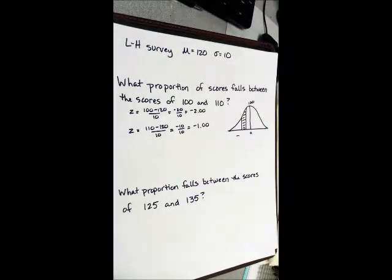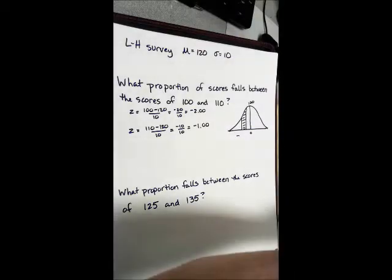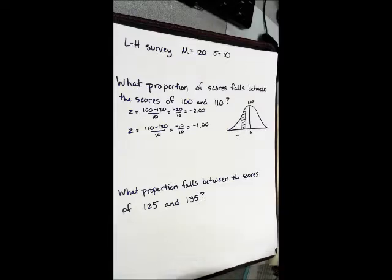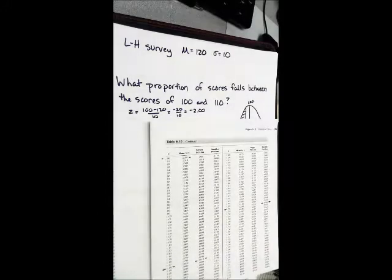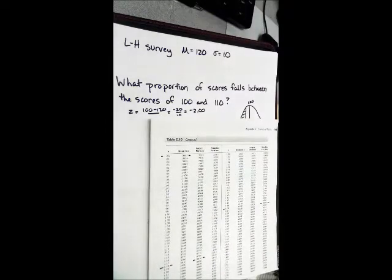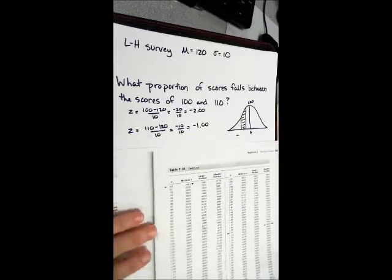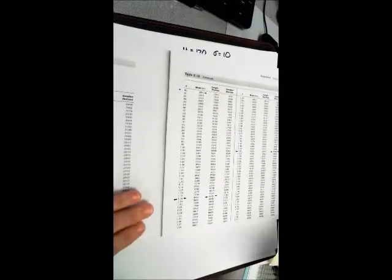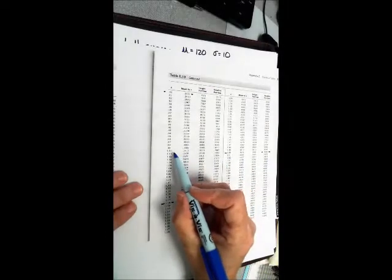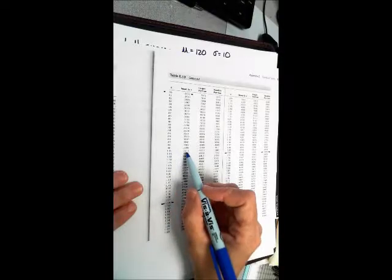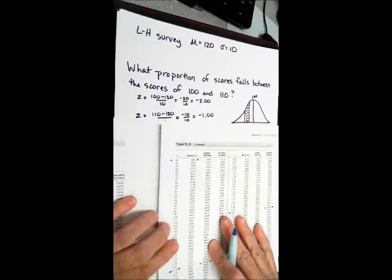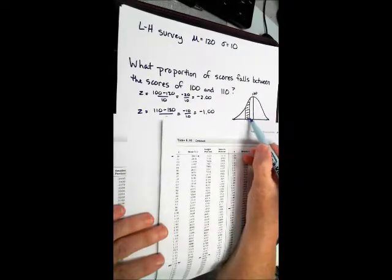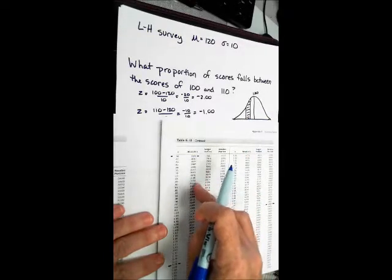We're going to look in the z-table for z-scores of 1 and 2. They're going to be negative numbers, but our z-score table does not worry about negative numbers. So let's look here. You've got a z-score of 1. And look at what we're looking for. We're outside of the mean.